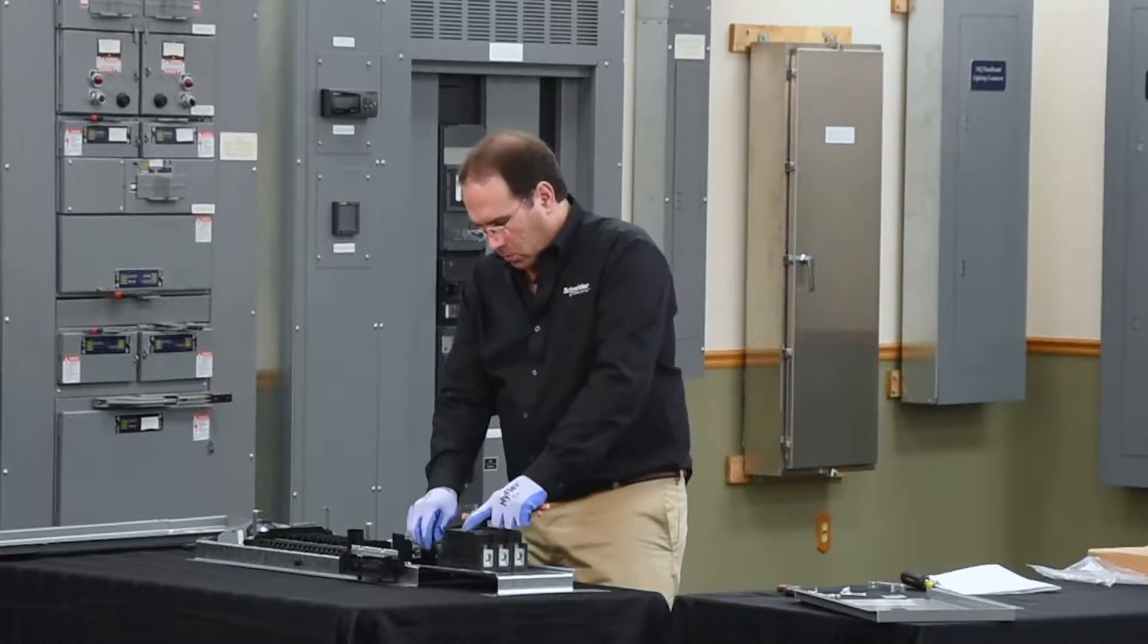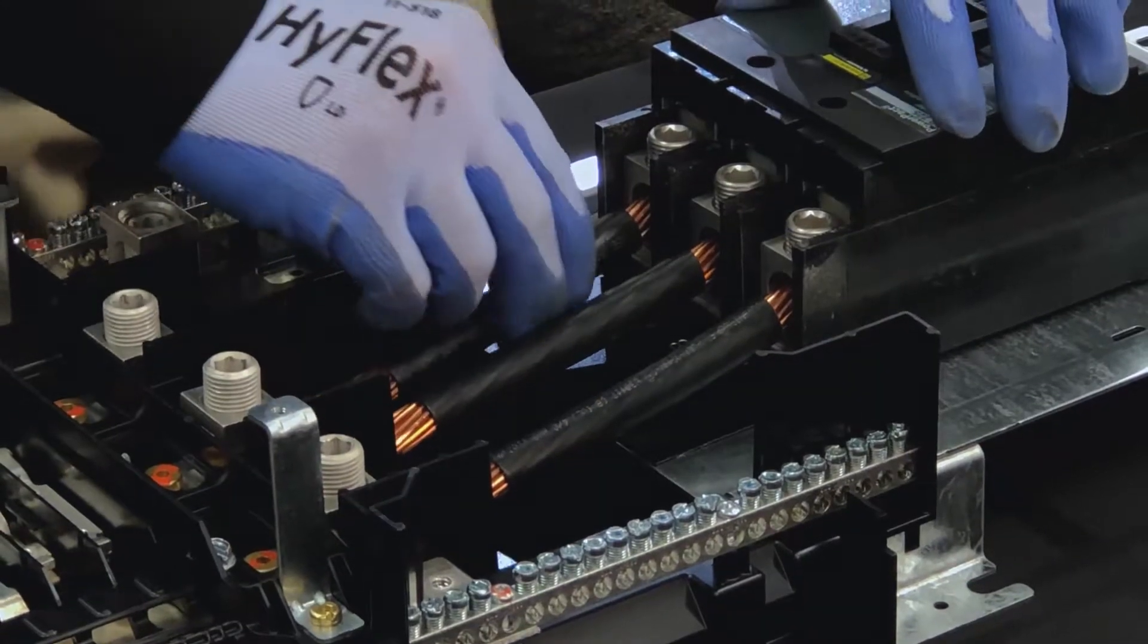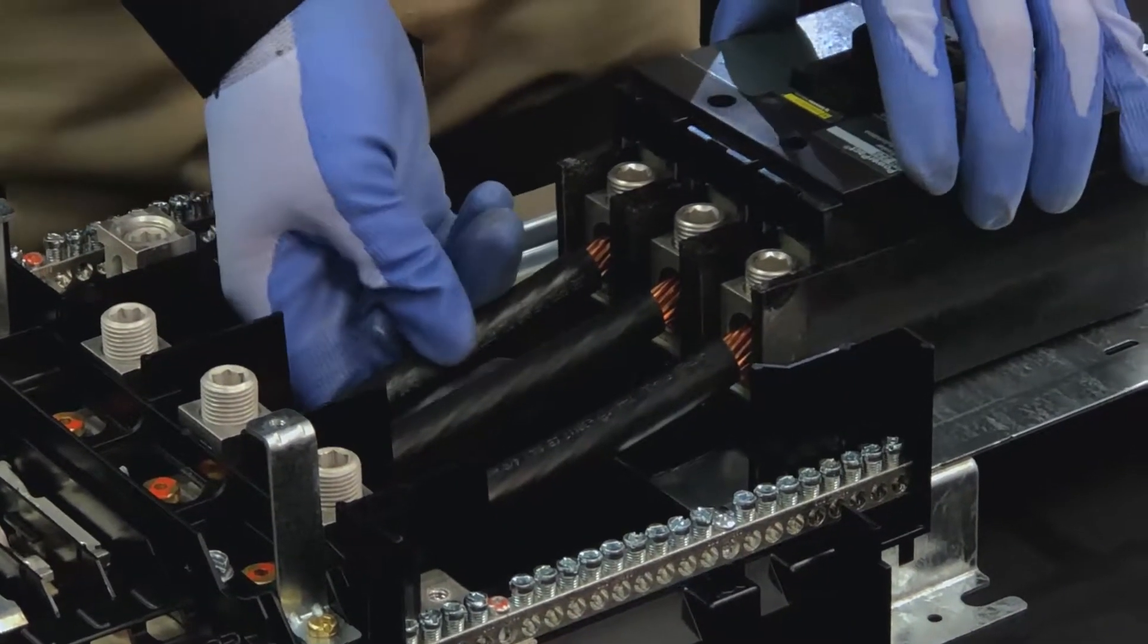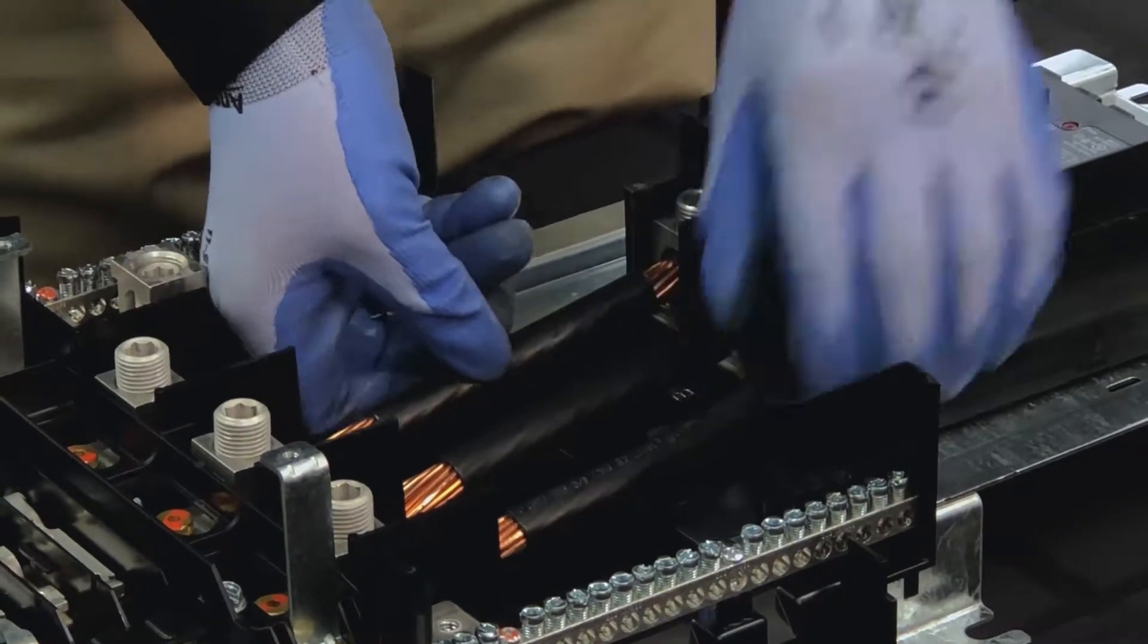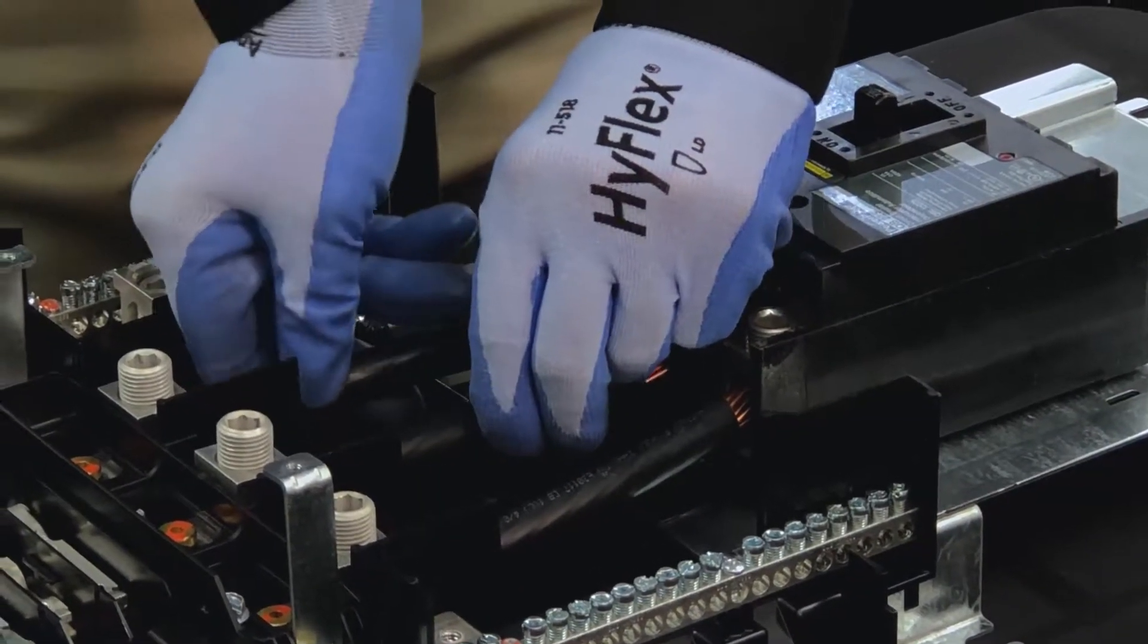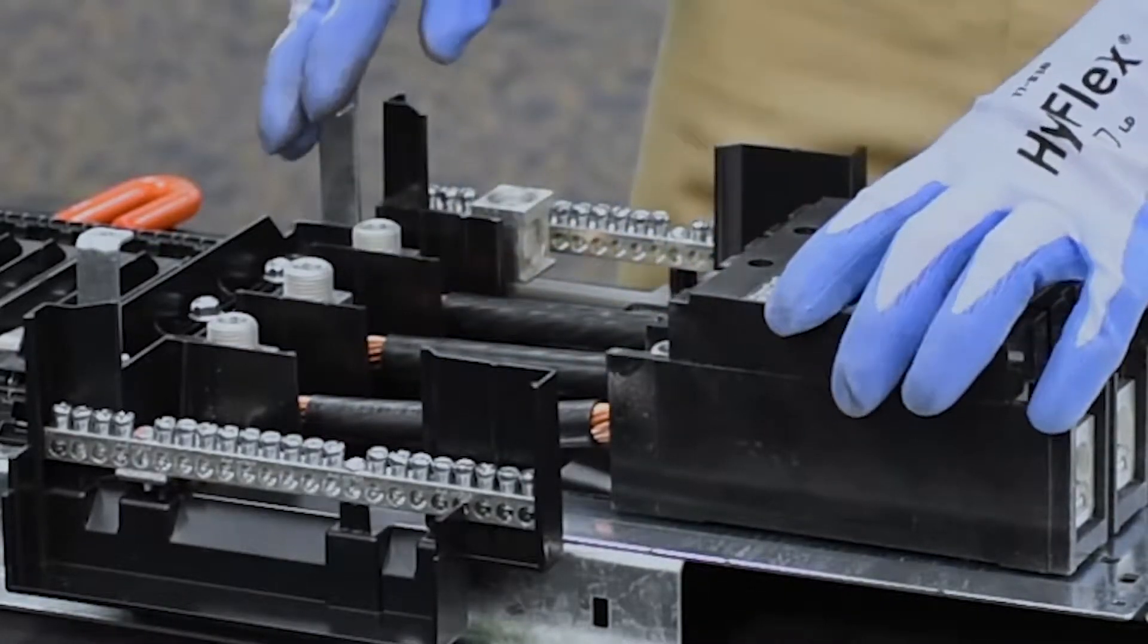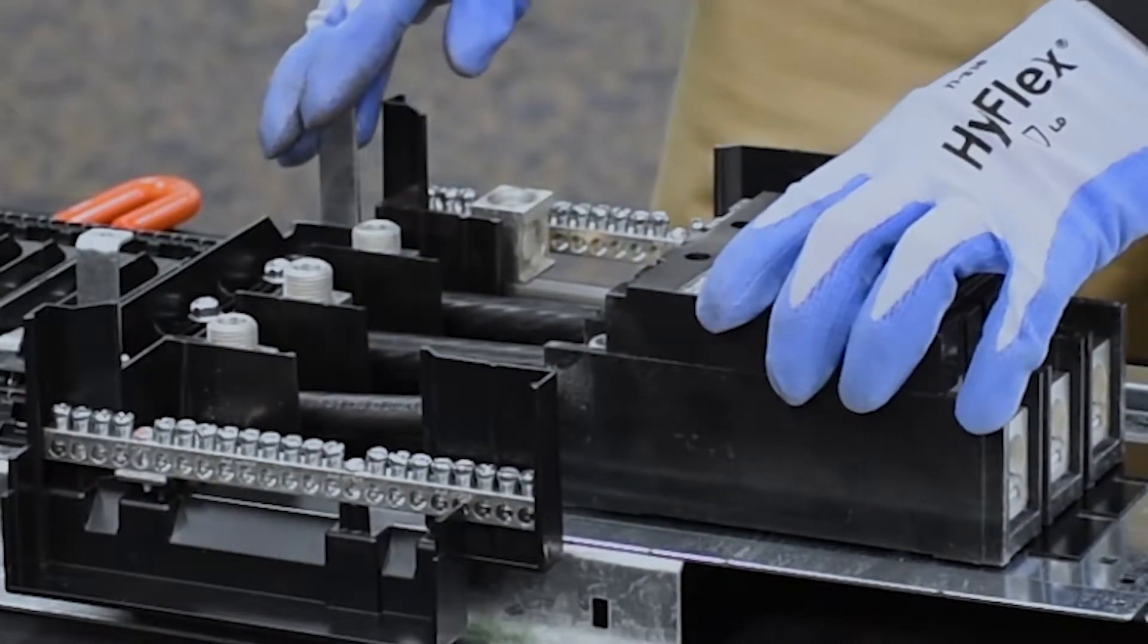To install the cables, you want to leave them loosely sitting inside the lugs of the breaker. Slide the breaker close to the panel board and then slowly move the cables into the lugs of the panel board, and then slide the entire assembly forward.